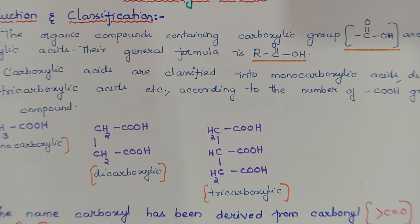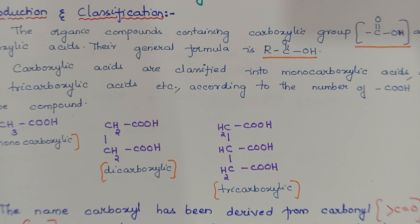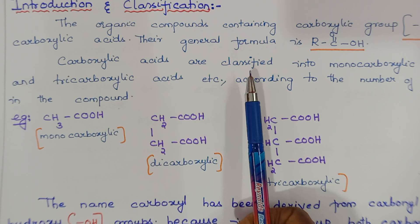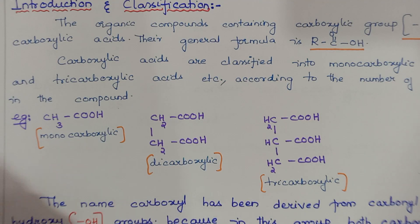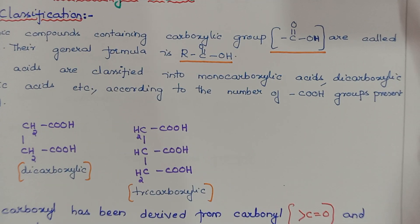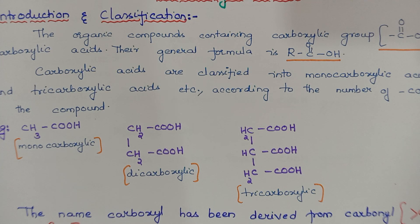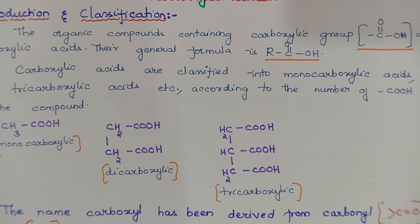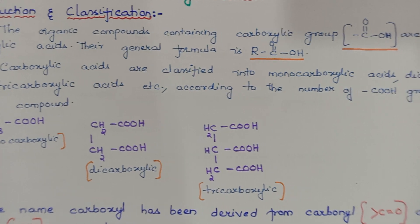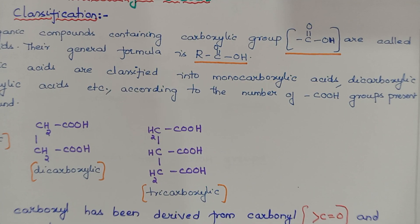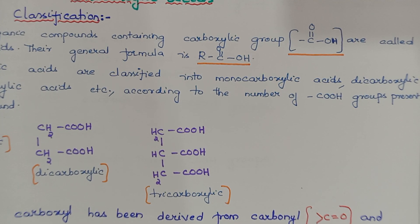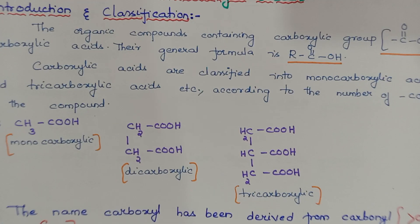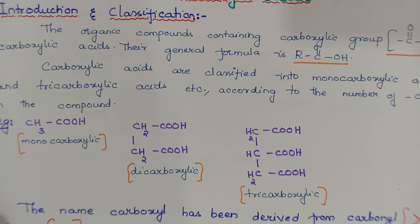Now coming to the classification of carboxylic acids. They can be divided into monocarboxylic acids, dicarboxylic acids, and tricarboxylic acids. This classification depends on the number of COOH groups present in the compound. If there is one COOH group, it is monocarboxylic; two COOH groups makes it dicarboxylic; and three COOH groups makes it tricarboxylic.